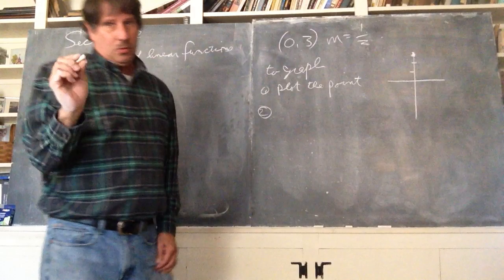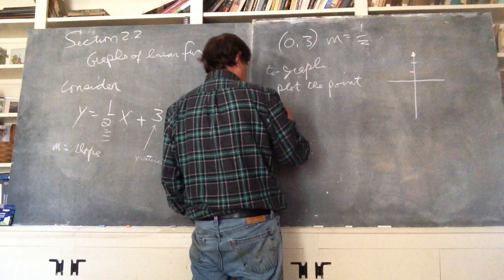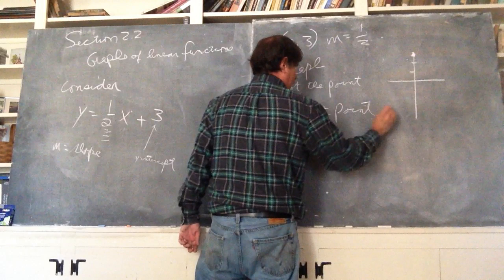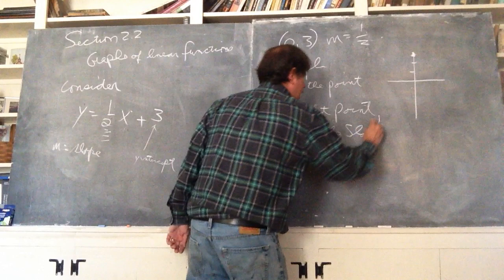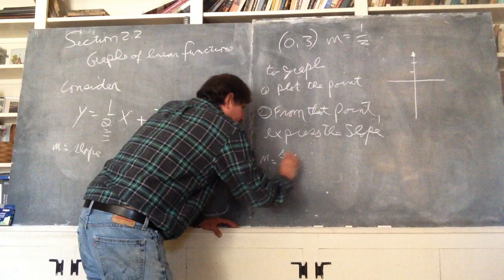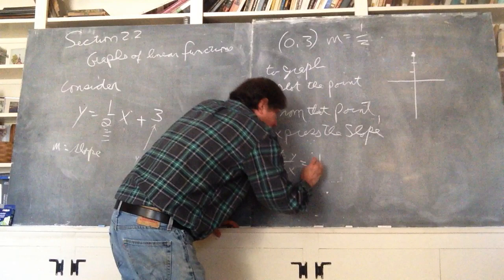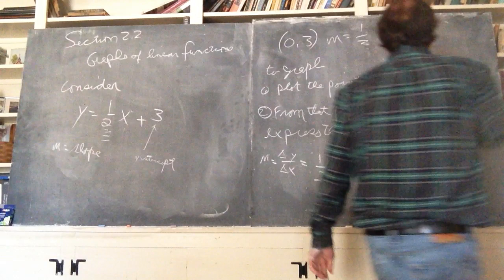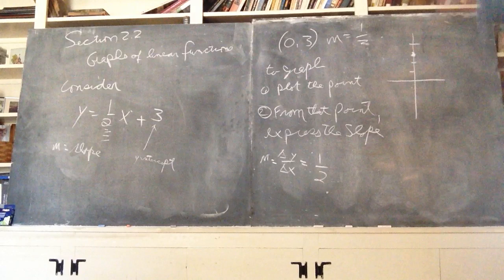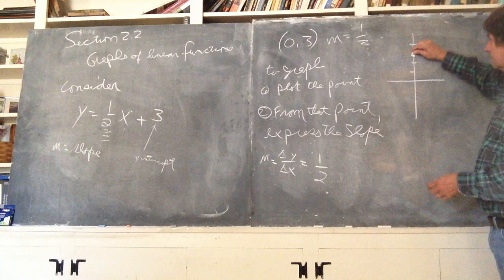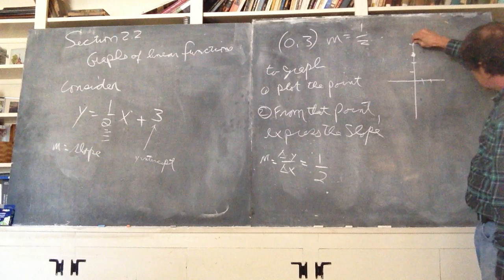From that point, this is important, from that point express the slope. That point express the slope. And just keep in mind, the slope is a ratio. It's a change in y over a change in x. And in this case, it's a half. In this case, the change in y is one and the change in x is two. So what I want to do, I want to use the slope to express another point, to plot another point. And meaning, the change in y is one. I'm going up one. The change in x is two. From here, I'm going over two.